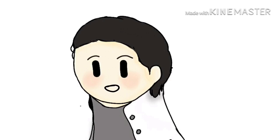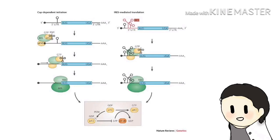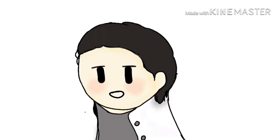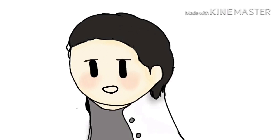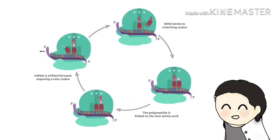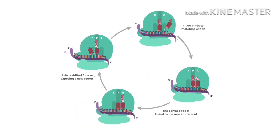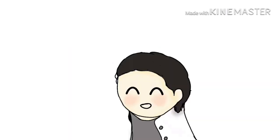Getting started: initiation. In initiation, the ribosome assembles around the mRNA to be read and the first tRNA, carrying the amino acid methionine, which matches the start codon AUG. Extending the chain: elongation. Elongation is the stage where the amino acid chain gets longer. In elongation, the mRNA is read one codon at a time, and the amino acid matching each codon is added to a growing protein.